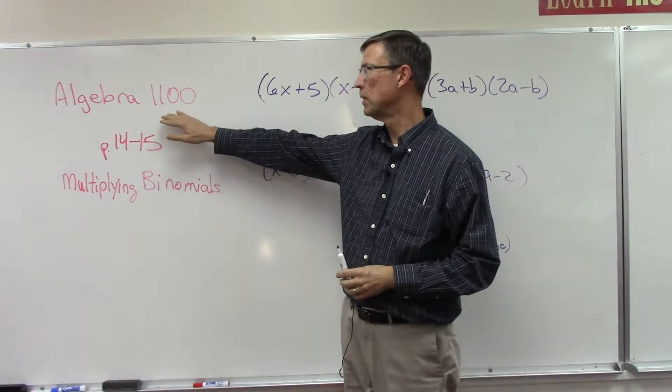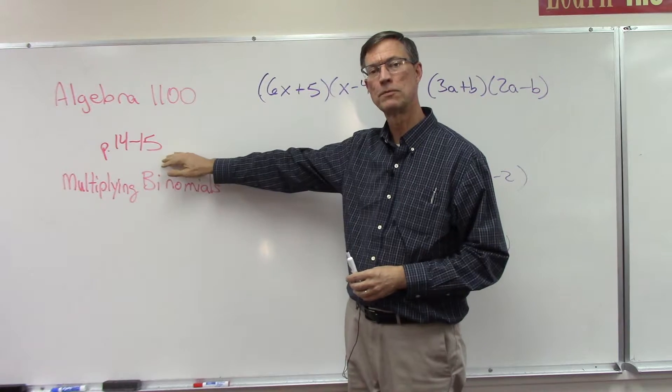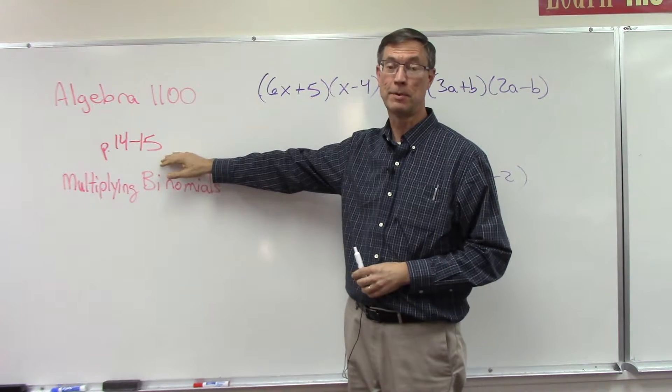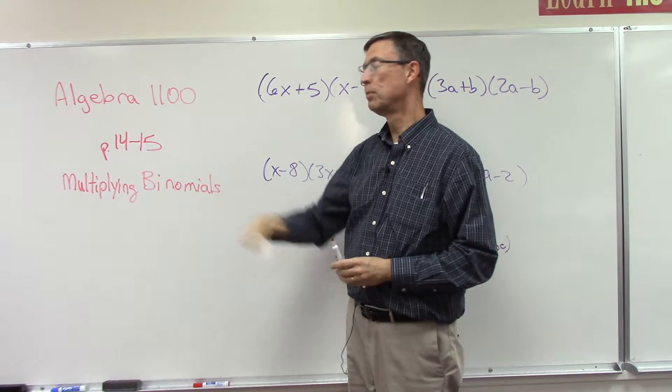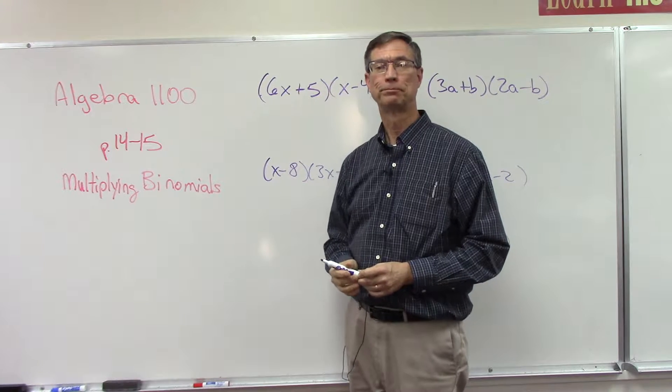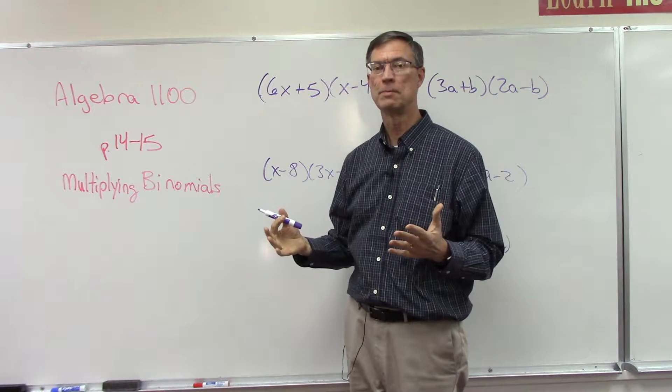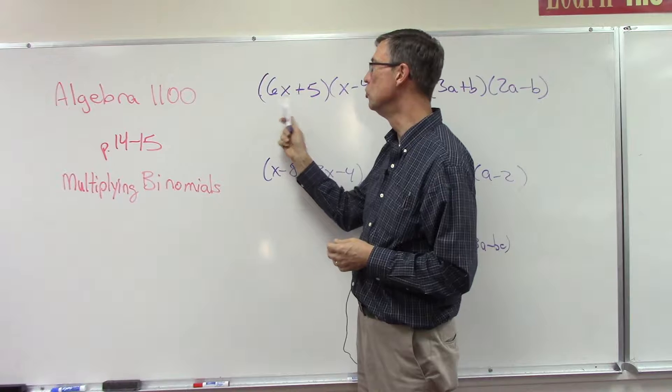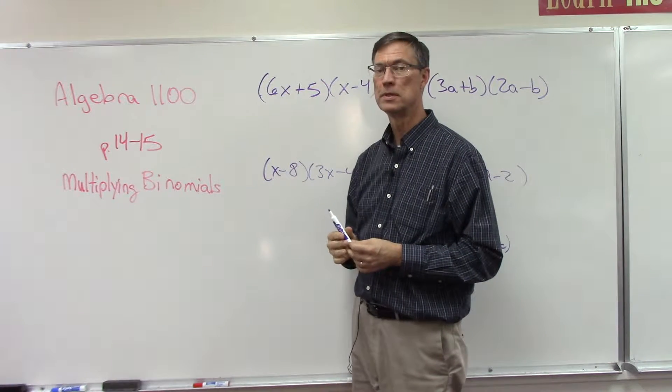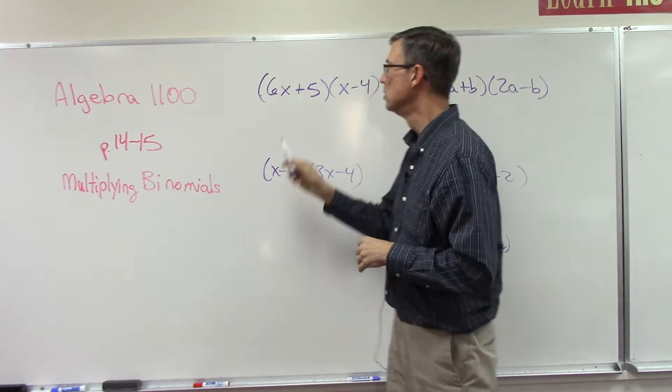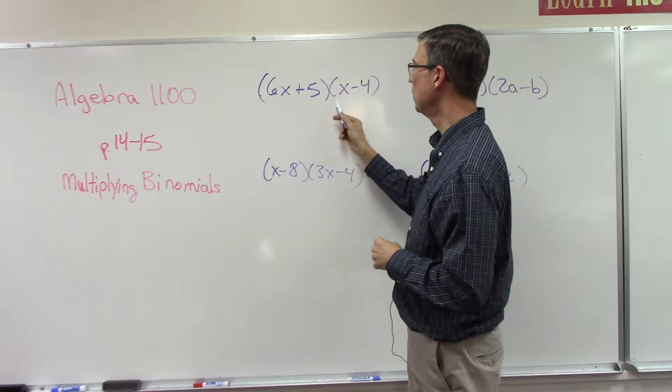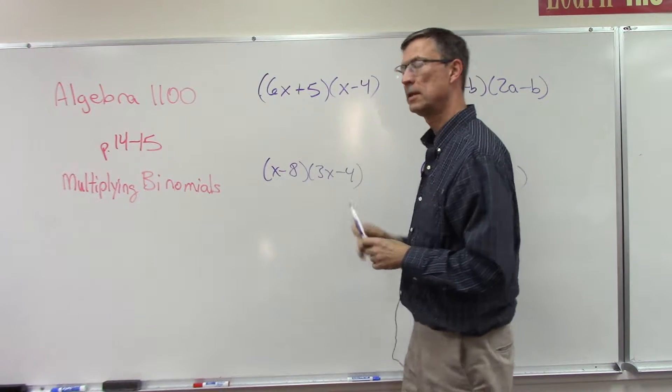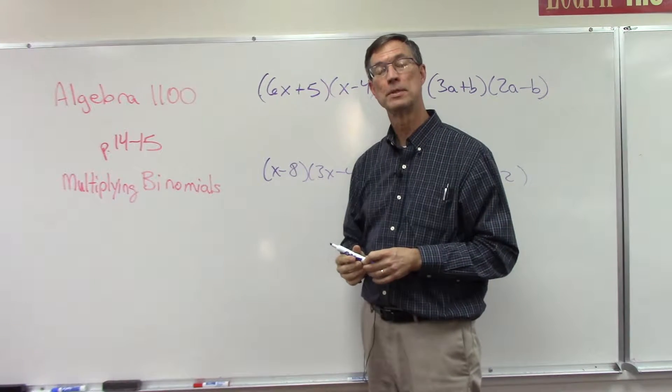This is another lesson for Algebra 1100 looking at pages 14 to 15, one of my favorite topics in algebra: multiplying binomials. A binomial is just a fancy math term that means we have two terms in the same parentheses. So this is a binomial, here is another binomial, and the fact that these two parentheses are side by side means we are multiplying them.